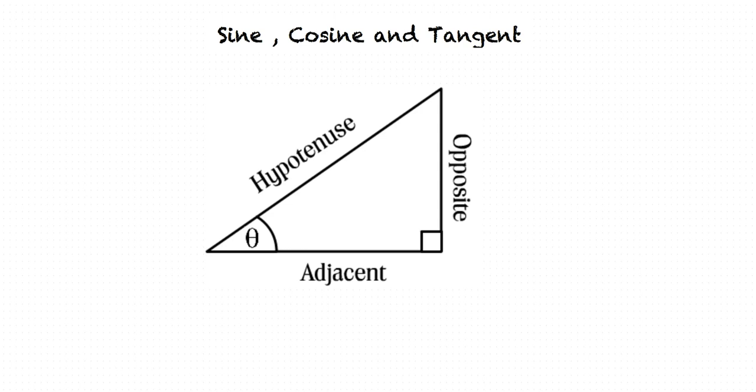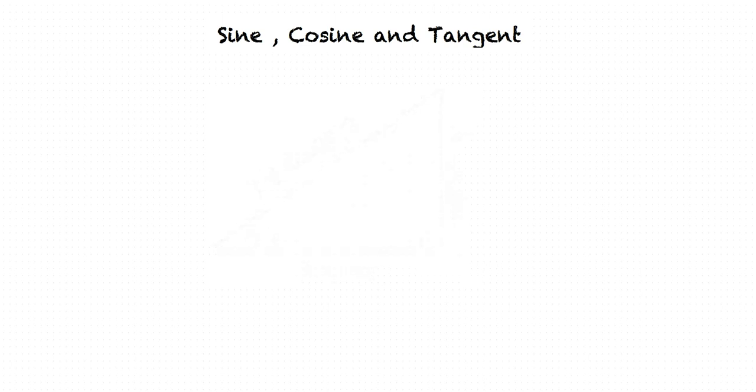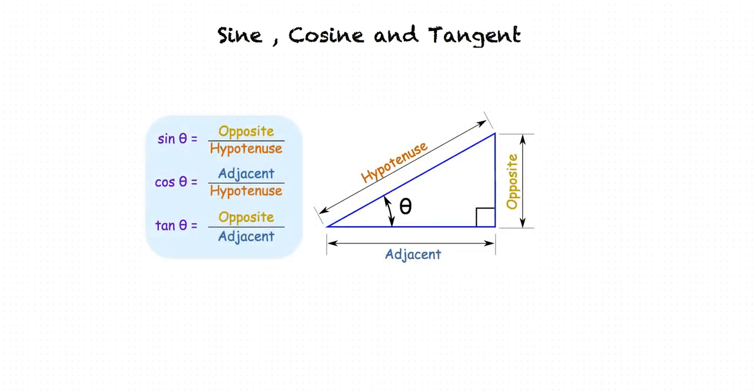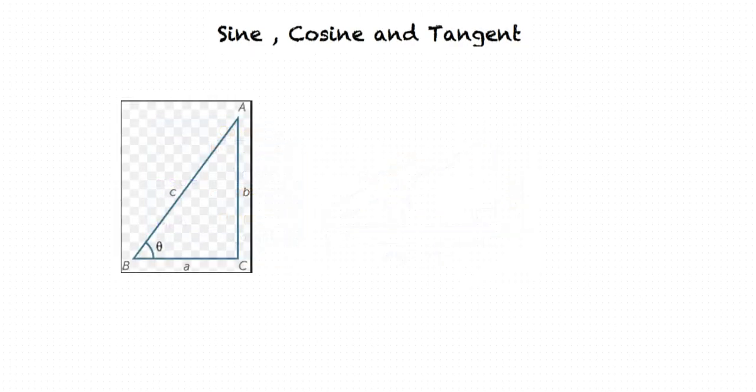What are sine, cosine, and tangent? Sine, cosine, and tangent are each a ratio of sides of a right-angled triangle. They are often shortened to sin, cos, and tan respectively. In any right-angled triangle, for any angle, the sine of the angle is the ratio of the length of the opposite side to the length of the hypotenuse. The cos of the angle is the ratio of the length of the adjacent side to the length of the hypotenuse. The tan of an angle is the ratio of the length of the opposite side to the length of the adjacent side.